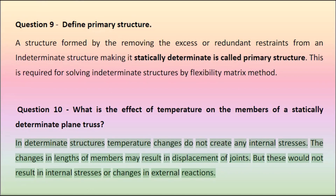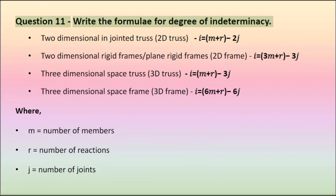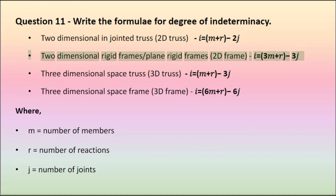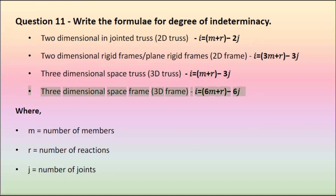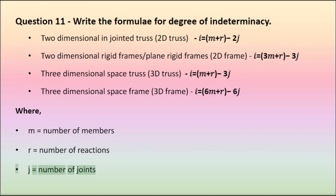...or changes in external reactions. Question 11: Three-dimensional space frame formula: M plus R equals 6J, where M equals number of members, R equals number of reactions, J equals number of joints.